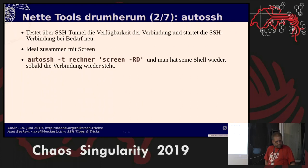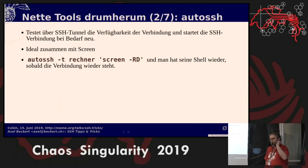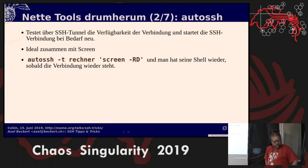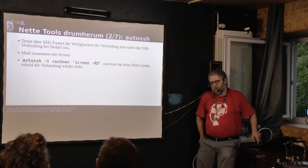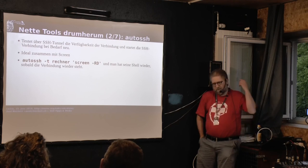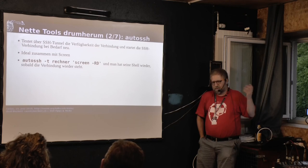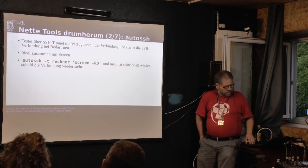Closer to SSH is AutoSSH. It works nicely with Screen. Its nice feature is it opens two tunnels in addition to the shell session — one tunnel connects on the other end to its own tunnel in the other direction and regularly sends data to check if it comes through. If not, it kills the SSH and restarts it with the same command-line options. Using dash capital RD — which means give me a Screen session, connect to one or start a new one — you always get a Screen session and get reconnected to the same one if the connection was interrupted. That's basically the way I read my mails.